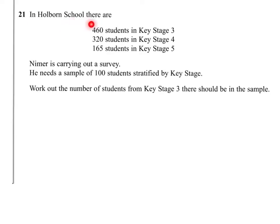In Holborn School, there are 460 students in Key Stage 3, 320 in Key Stage 4, and 165 in Key Stage 5. Nimert is carrying out a survey and needs a sample of 100 students stratified by Key Stage.